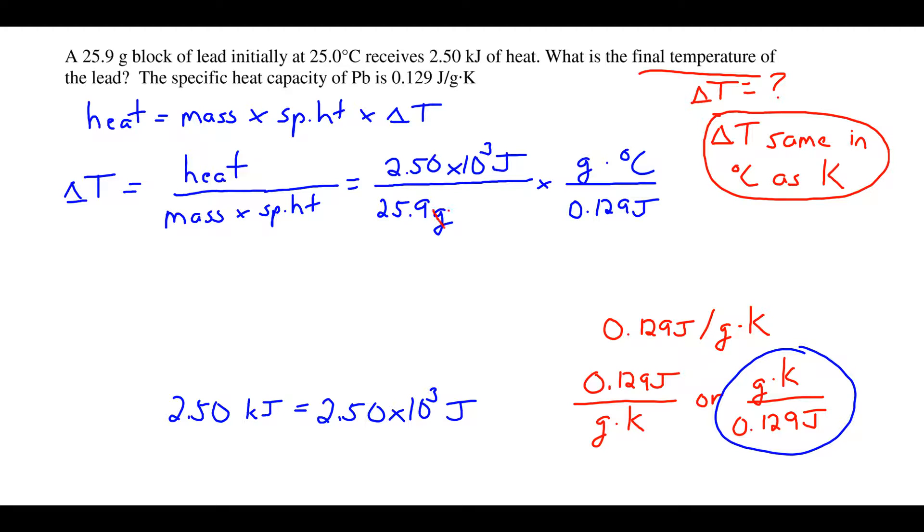If we look at our units, we see that grams cancel and joules cancel. We're left with our Delta T expressed in either degrees C or K. As I mentioned, it makes no difference for Delta T whether we use Celsius or Kelvin degrees because they are the same size. So we're set to just chunk these numbers out and get our answer.